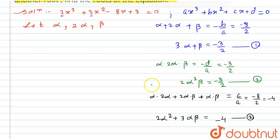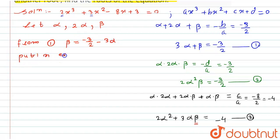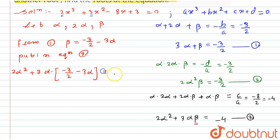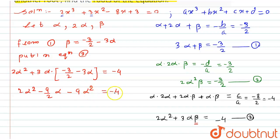Now we substitute the value of β from equation 1 into equation 3. From equation 1, β = -3/2 - 3α. Putting this into equation 3: 2α² + 3α(-3/2 - 3α) = -4. On simplifying: 2α² - 9α/2 - 9α² = -4.